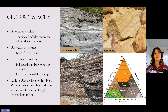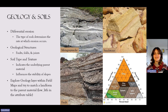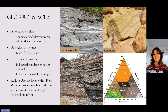Let's dig a little bit deeper into geology and soils. One important concept is differential erosion — the idea that different rocks erode at different rates, with harder rocks being more stable such as metagraywacke, and softer rocks such as sandstone being more susceptible to erosion. Geological structures are also important, including faults, folds, and joints. For example, faults can help form escarpments as rock separates and creates a steep slope. Soil type and texture can help indicate the underlying parent material and influence the stability of slopes.